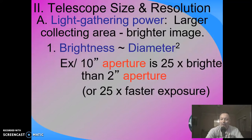That means the 10-inch scope is 25 times faster. So if you're doing an hour-long exposure of a galaxy with your 10-inch scope, it's going to take you 25 hours with your little 2-inch scope. So bigger is better with telescopes.